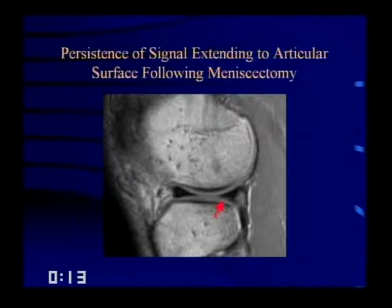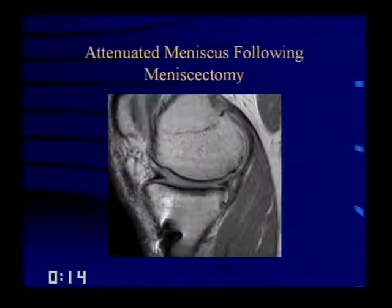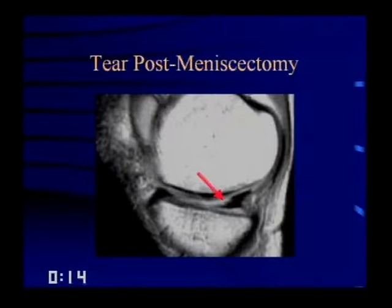If less than 25% of the meniscus has been removed, it often looks normal. Here's a very attenuated post-meniscectomy meniscus that maintains a relative meniscoid shape — that's a normal postoperative appearance. In contrast, another example doesn't maintain a meniscoid shape and has a jagged edge — that was a tear after meniscectomy. Look for those jagged edges.